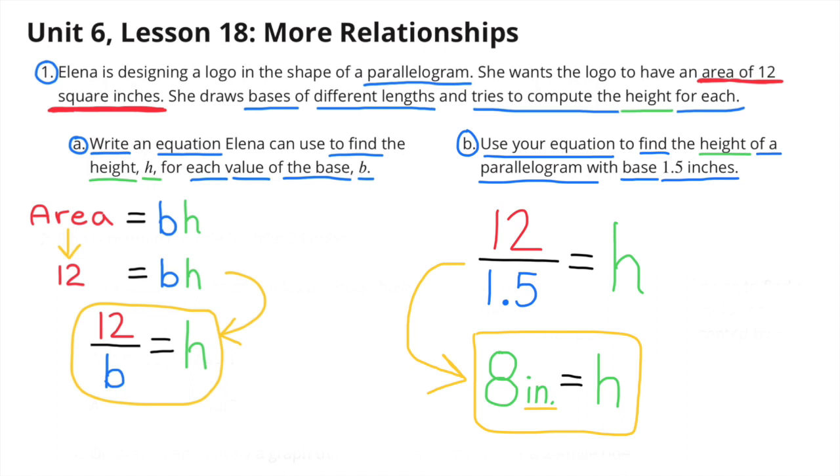B. Use your equation to find the height of a parallelogram with base 1.5 inches. So the area divided by the base will give us the height. So 12 divided by 1.5 will equal the height. And 12 divided by 1.5 is 8. So the height is 8 inches.